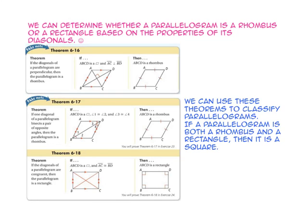In Theorem 6-1-6, if the diagonals of a parallelogram are perpendicular, then the parallelogram is a rhombus. In Theorem 6-1-7, if one diagonal of a parallelogram bisects a pair of opposite angles, then the parallelogram is also a rhombus. In Theorem 6-1-8, if the diagonals of a parallelogram are congruent, then the parallelogram is a rectangle.